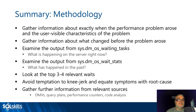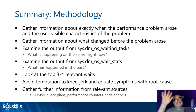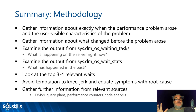To summarize the methodology: gather information about the problem — how long has it been happening, what changed? Look at sys.dm_os_waiting_tasks to see a pattern. Look at sys.dm_os_wait_stats, especially if you have snapshots over time. Focus on the top three or four relevant waits. If you have a baseline, compare against it to see what's different. Understand what the wait types mean, drill in, and avoid knee-jerking.